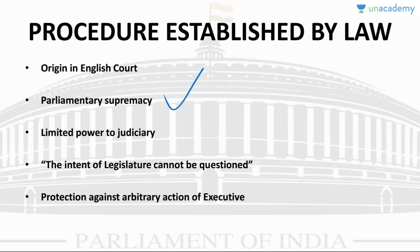The court applies the following three tests to verify whether the action of the state is valid: first, whether there is any law that authorizes the state to take away the life or liberty of an individual; second, whether the legislature was competent to pass the law; and third, whether the executive followed all the procedure established by law. If any one of these is not fulfilled, the court will declare the action of the executive as illegal.